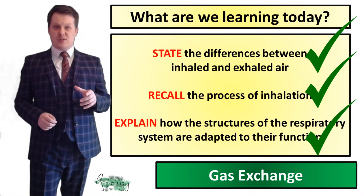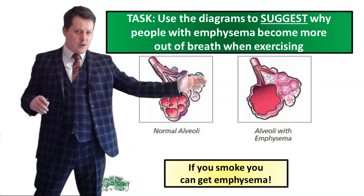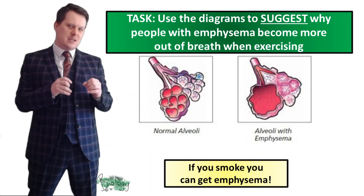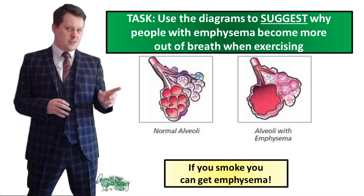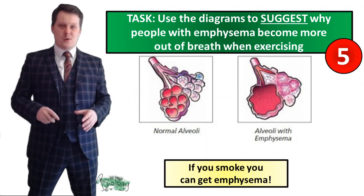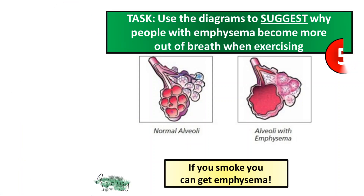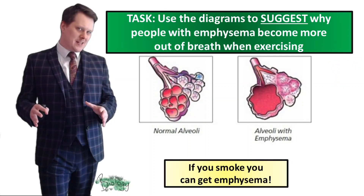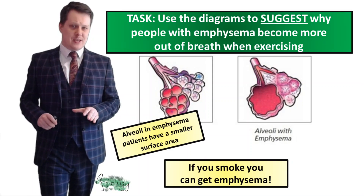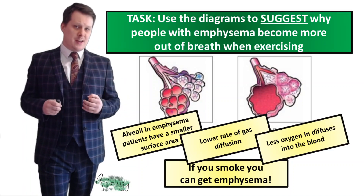So now we've explained how the structures of the respiratory system are adapted for their function. Next, I want you to look at these two diagrams — a normal alveolus and an alveolus from a patient with emphysema. Use these diagrams to suggest why people with emphysema become more out of breath when exercising. Think about surface area and how that affects the emphysema patient. The alveoli from the emphysema patient have a much smaller surface area, meaning gas exchange is not as efficient, and so less oxygen enters the blood.